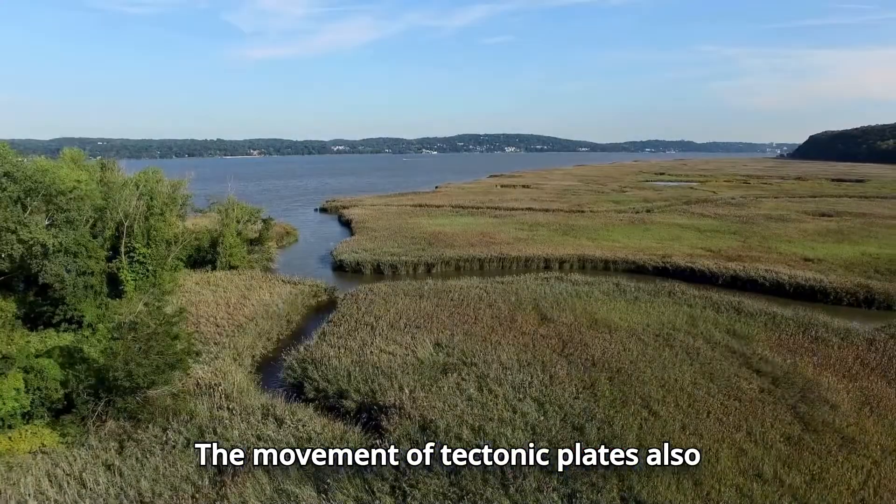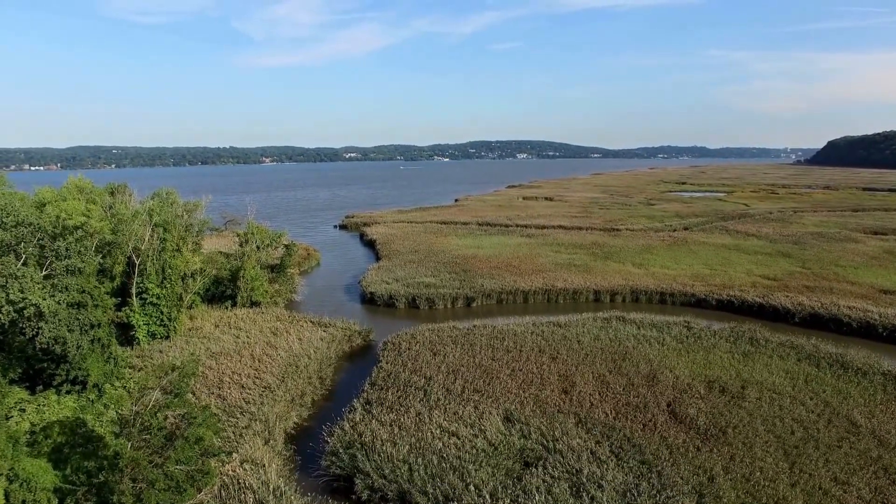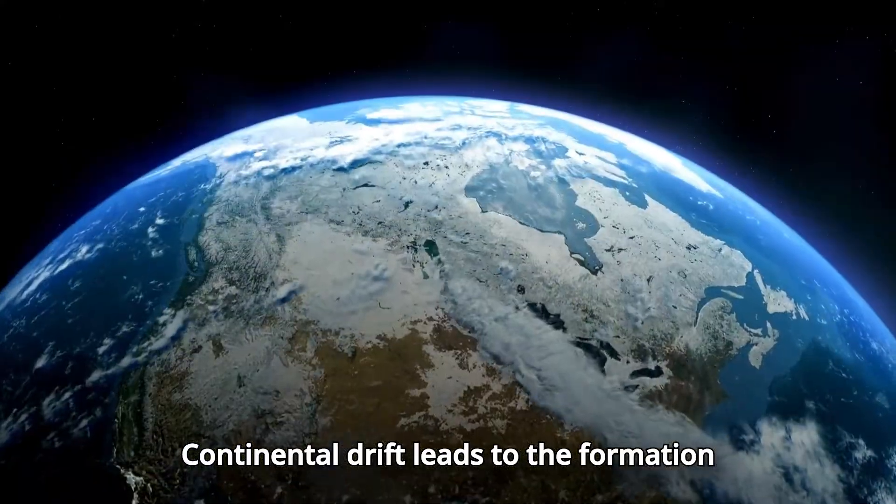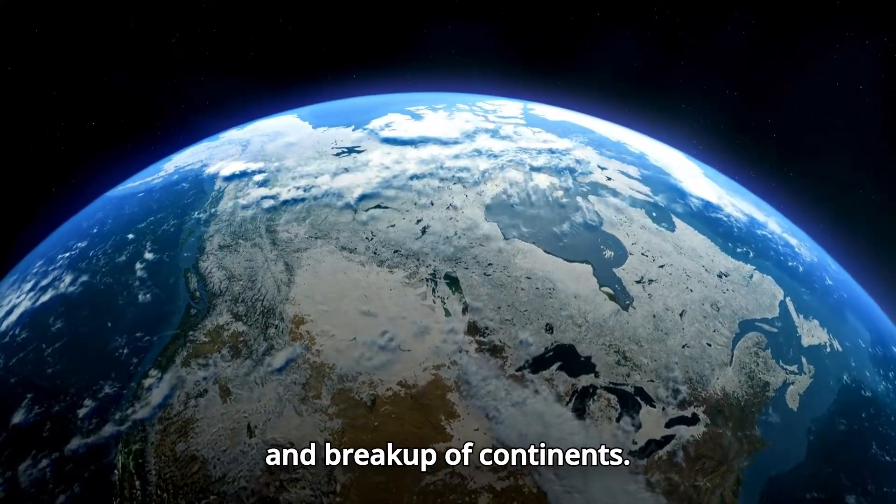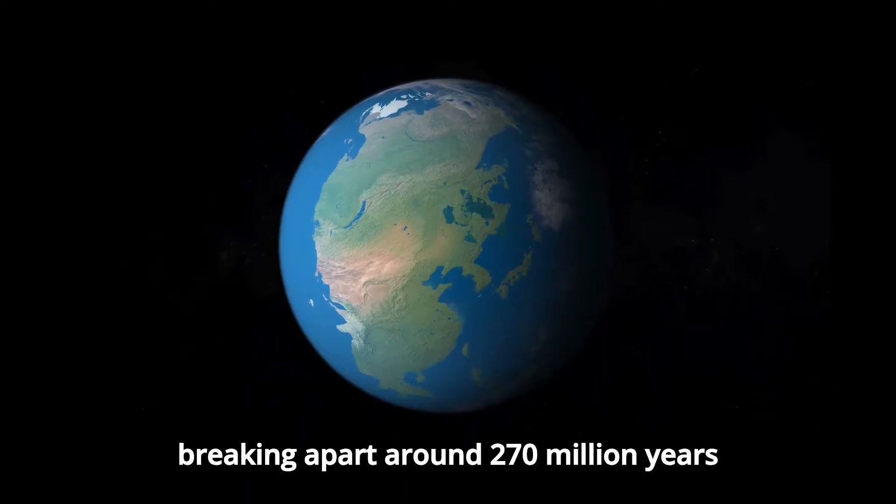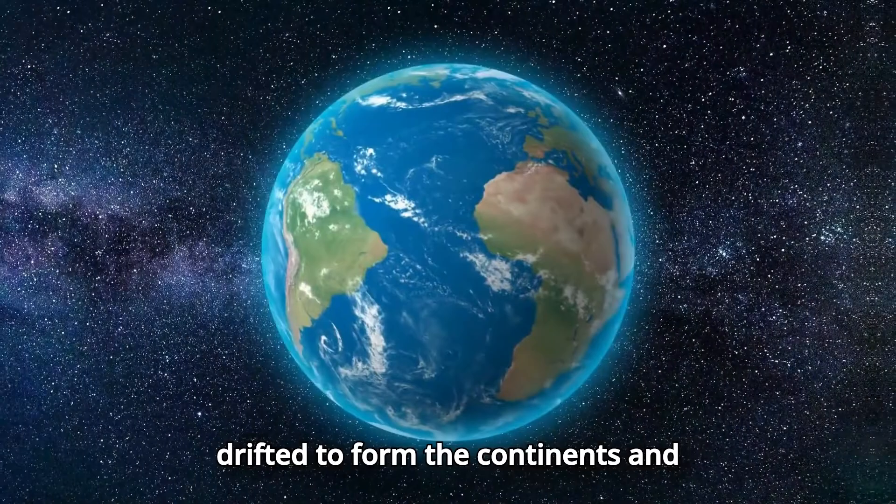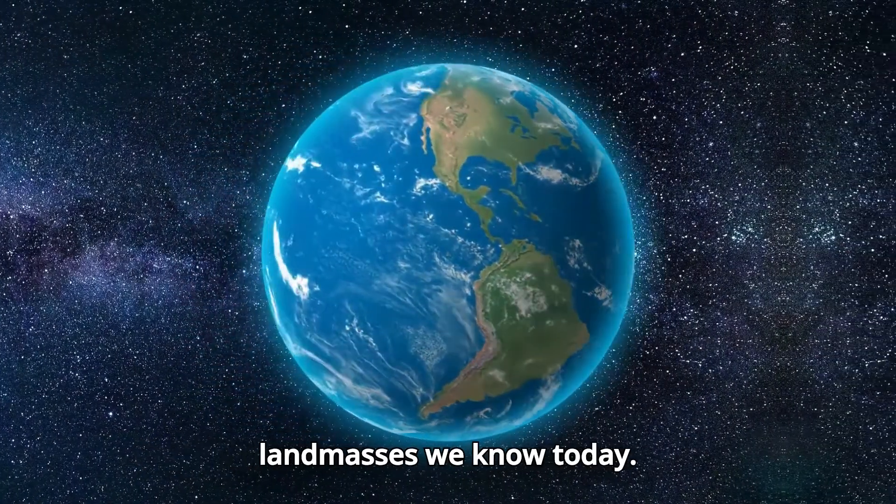The movement of tectonic plates also helps to explain continental drift, the movement of the continents. Continental drift leads to the formation and breakup of continents. A supercontinent called Pangaea began breaking apart around 270 million years ago. As Pangaea split, the pieces gradually drifted to form the continents and landmasses we know today.